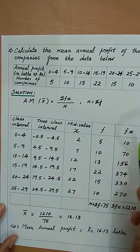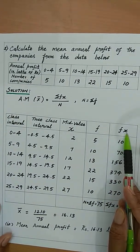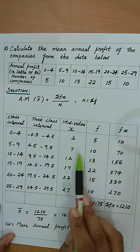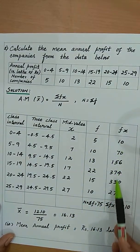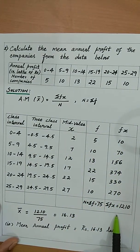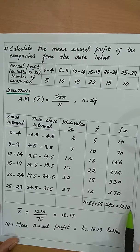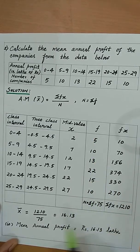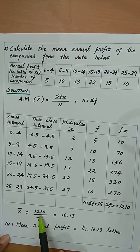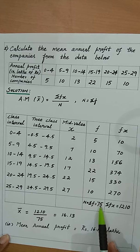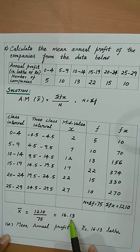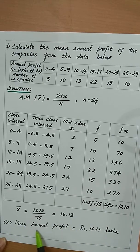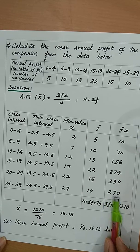Then compute fx: 2 × 5 = 10, 7 × 10 = 70, etc., and find the total Σfx. The total frequency n = 75. Therefore x̄ = Σfx / 75 = 16.13 lakhs. The mean annual profit is rupees 16.13 lakhs.